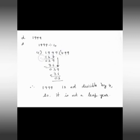4 times 4 is 16. Then do subtraction. 9 minus 6 is 3, and 1 minus 1 is 0. Then drop the digit 9, it becomes 39. 4 times 9 is 36. Next, do subtraction. 9 minus 6 is 3, and 3 minus 3 is 0. Then drop the digit 9, it becomes 39.